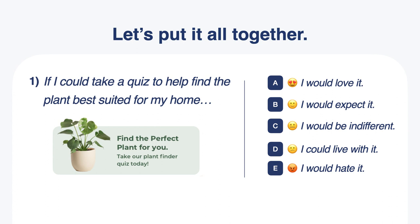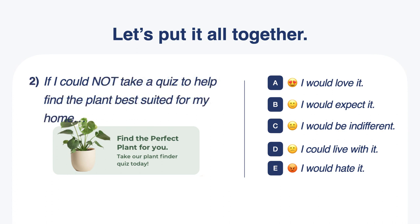Visualizing what it looks like in an actual survey: we ask 'If I could take a quiz to help find the plant best suited for my home' — it always helps to have some tangible rendering of what that feature could look like, even if abstract. The participant is presented with options: I would love it, I would expect it, I would be indifferent, I could live with it, or I would hate it. The dysfunctional version asks: 'If I could not take a quiz to help find the plant best suited for my home' — with the same response set.